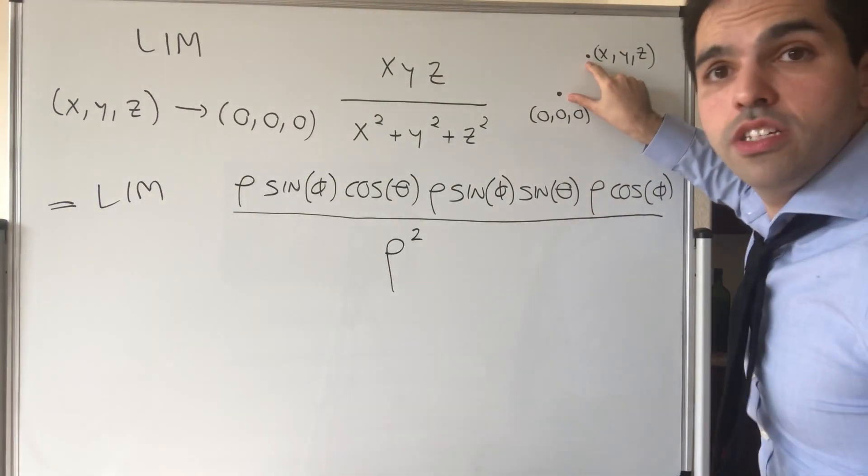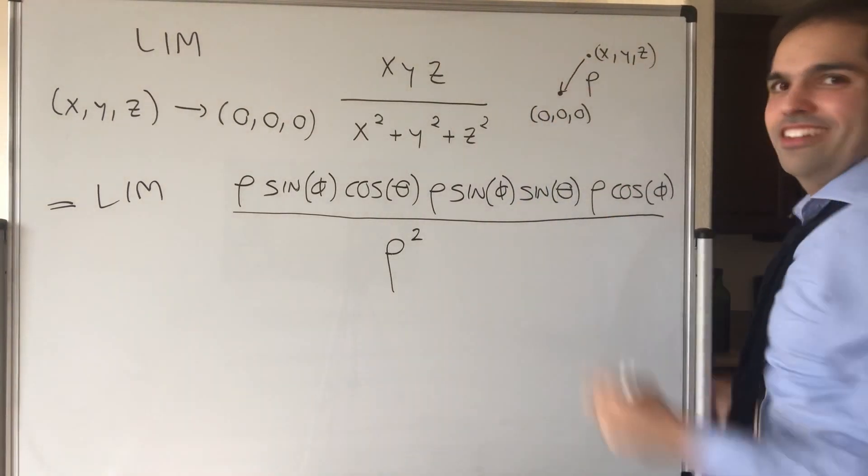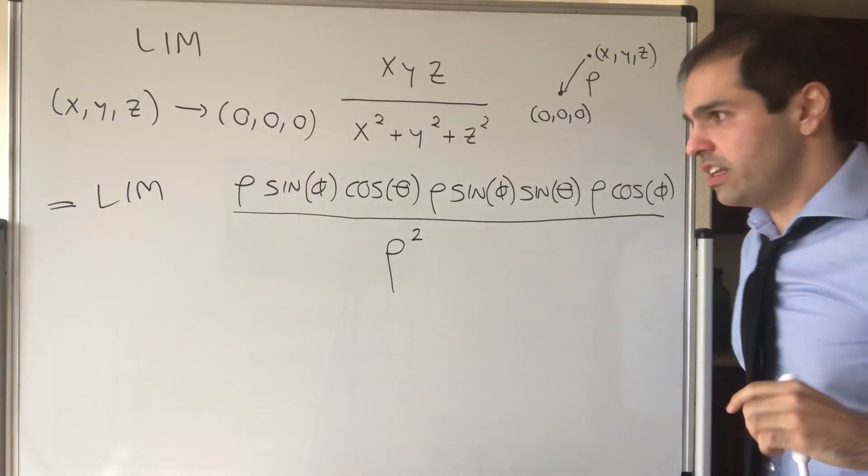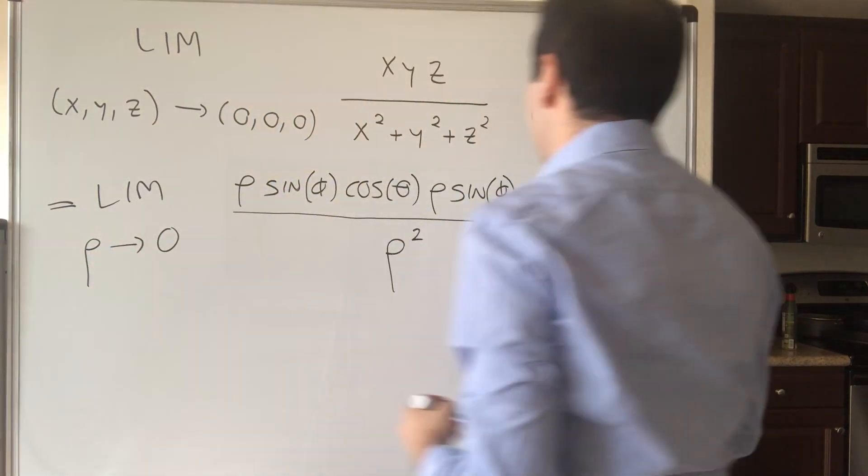Now, rho, which is the radius or the rhodius, let's go on a rho deal, rho, the distance goes to zero. So that's not a problem. So it's the limit as rho goes to zero.